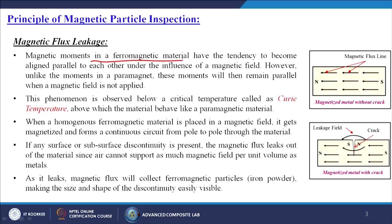Now what is the principle behind it? The first principle is magnetic flux leakage, which gives a broader idea of the logic behind it. Magnetic moments in a ferromagnetic material have the tendency to become aligned parallel to each other under the influence of a magnetic field. Here you can see that all the magnetic flux lines are parallel to each other — this is the magnetized metal without any crack.